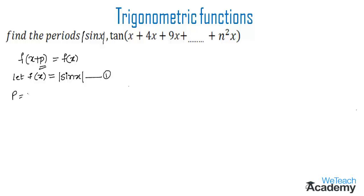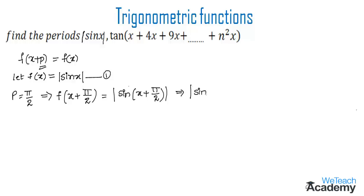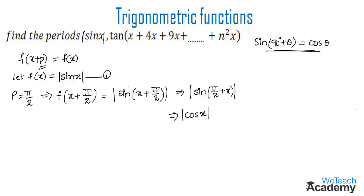Let us try p = π/2. We find f(x + π/2) by replacing x with x+π/2 in equation 1, giving |sin(x + π/2)| = |sin(π/2 + x)|. Using the identity sin(90° + θ) = cos θ, we get |cos x|. Since f(x + π/2) = |cos x| whereas f(x) = |sin x|, they are not equal, so π/2 is not the period.